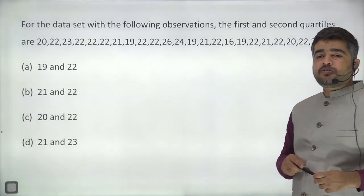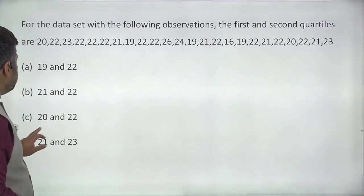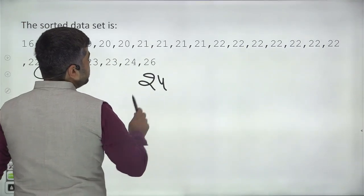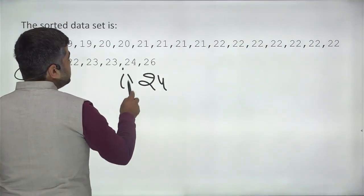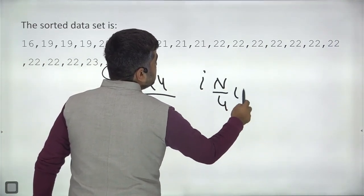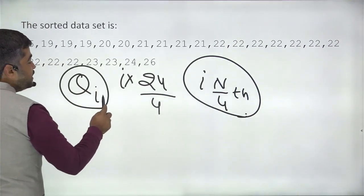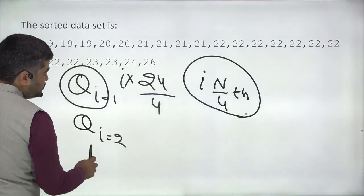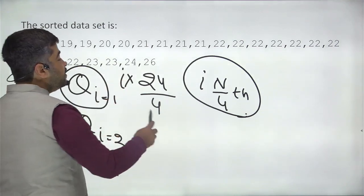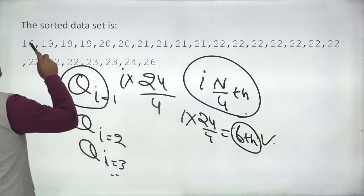Question eight: for a data set with given observations, find the first and second quartiles. First, arrange the data in ascending order. You have a total of n equal to 24 data points. The formula for the i-th quartile is the value at the (i × n / 4)-th position. Quartile 1 uses i equal to 1, Quartile 2 uses i equal to 2, and Quartile 3 uses i equal to 3.